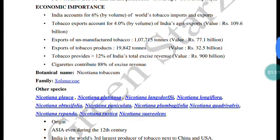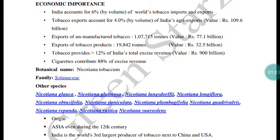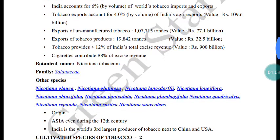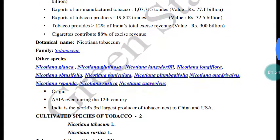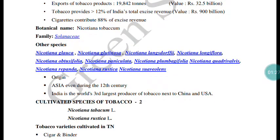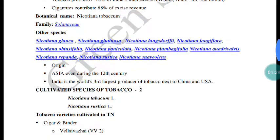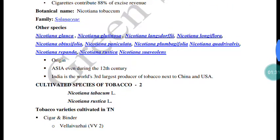India's export volume accounts for around 4% by value, approximately 109.6 billion. Export of unmanufactured tobacco is around 1 lakh 7,715 tons as primary processed or unprocessed material. Export receipts generate major revenue. Nicotiana tabacum belongs to the family Solanaceae.